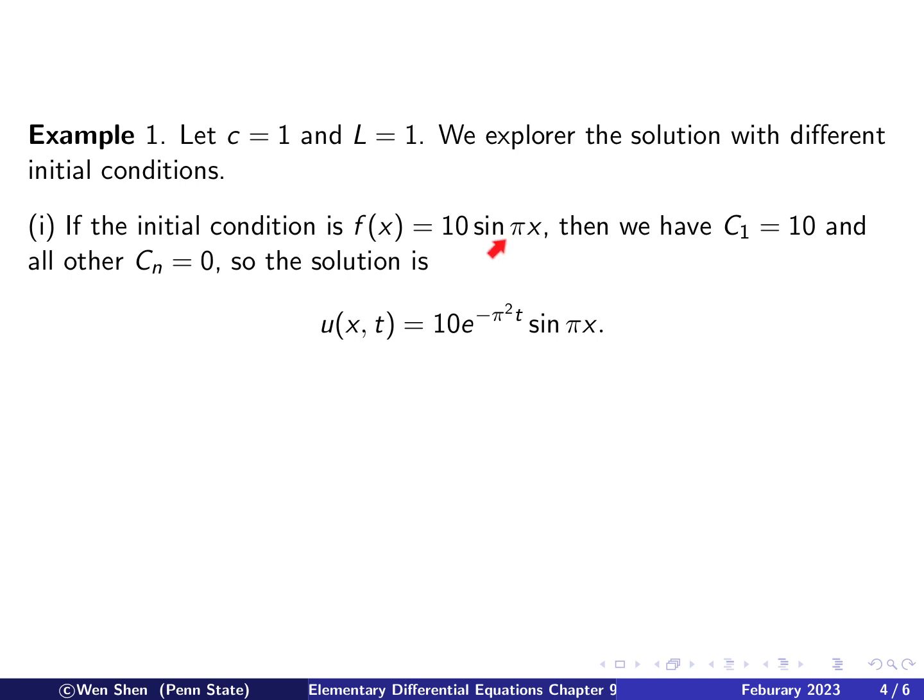So the first initial condition we considered is f(x) is 10 times sine pi x. And this is the term where n equals 1. Then we see that the cn's will have c1 equals 10, which is the same number here. And then all the other cn's will be 0. The solution would have just one term, that is 10 times e to the negative pi square t. So because n is 1 here, so n square is 1, and sine pi x. So it's an oscillation in the space, and the amplitude of the oscillation here is an exponential decay in time.